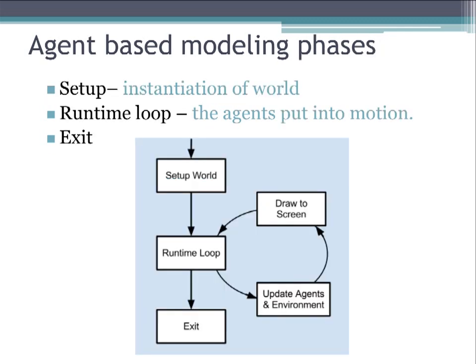There are three main phases in any agent-based model. There's the setup phase, where the world is instantiated. The runtime loop, where agents go through their behaviors and change their states, and the environment is updated. Also in the runtime loop, the screen where the output data is updated. And then there's the exit — either the user hits the quit button, or the model runs to some terminal state.